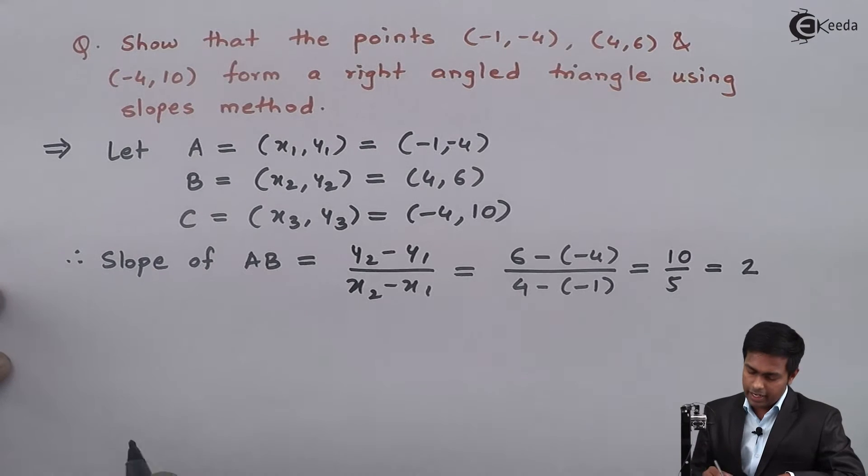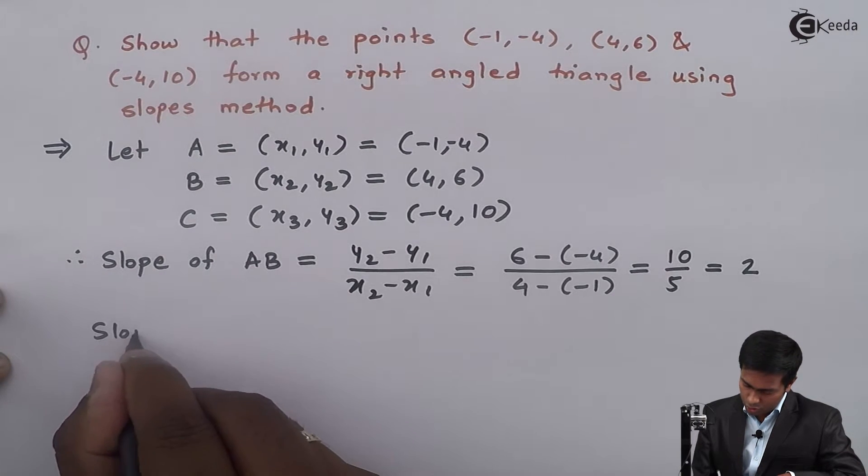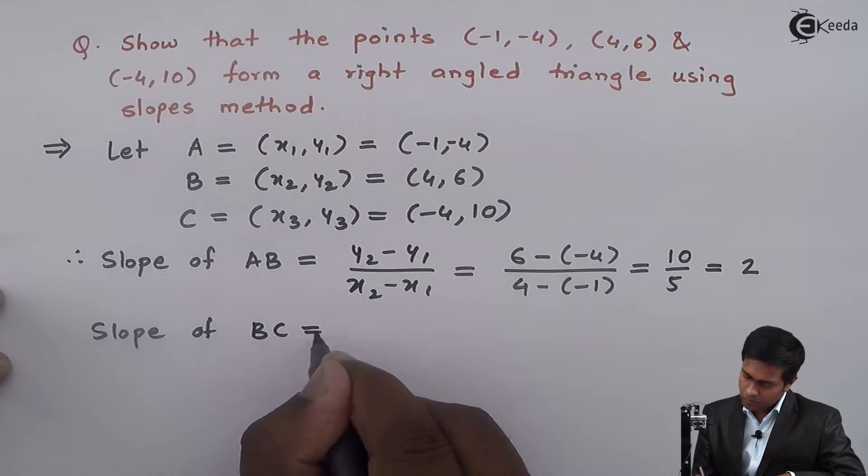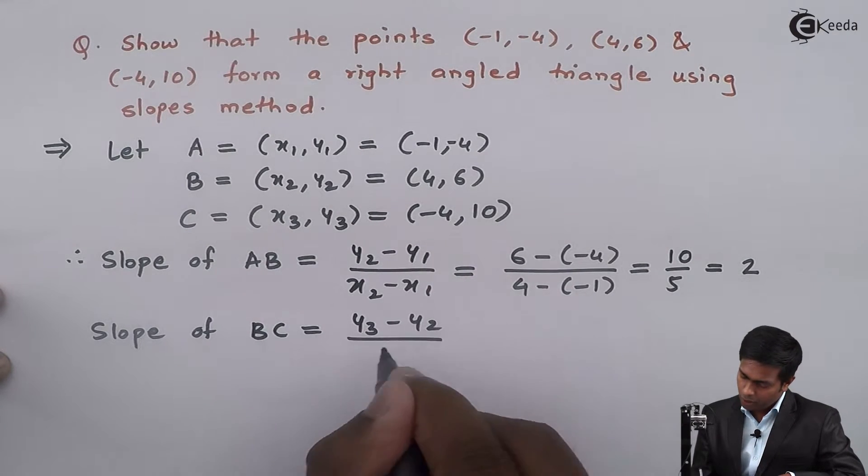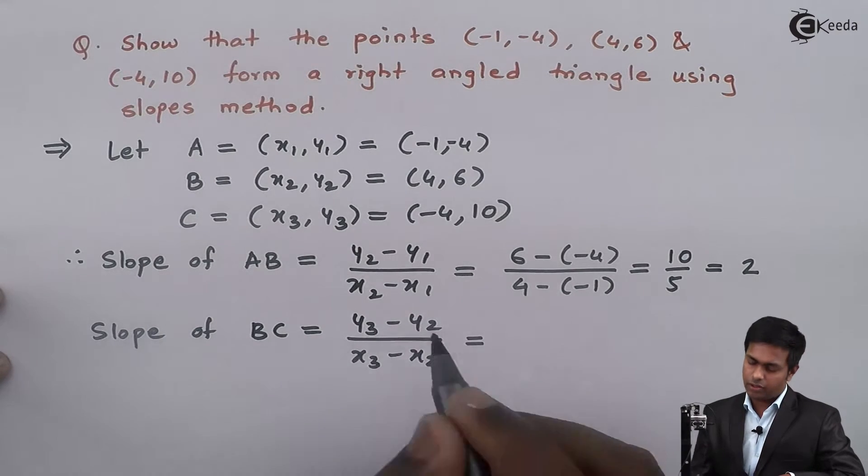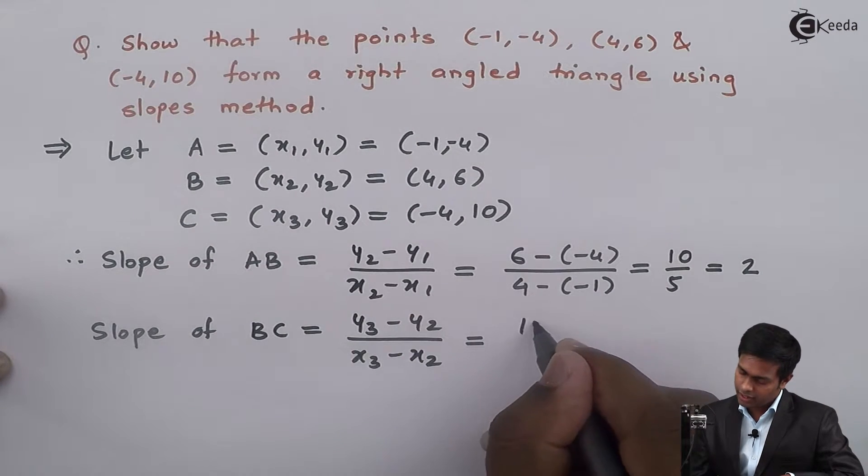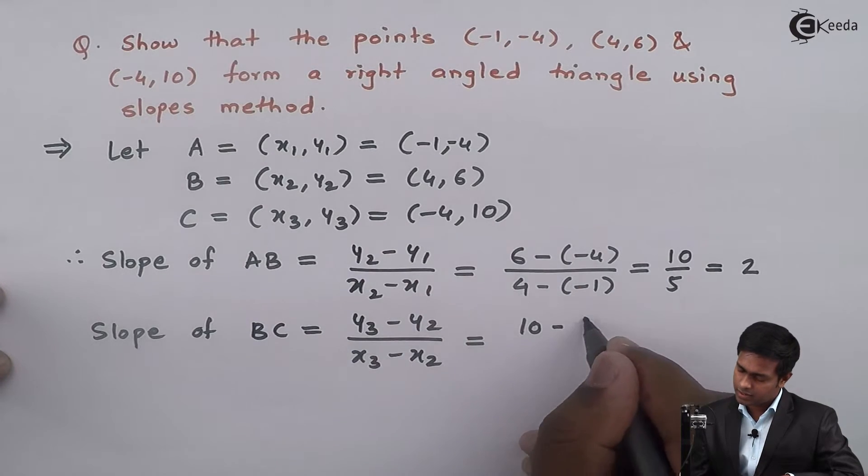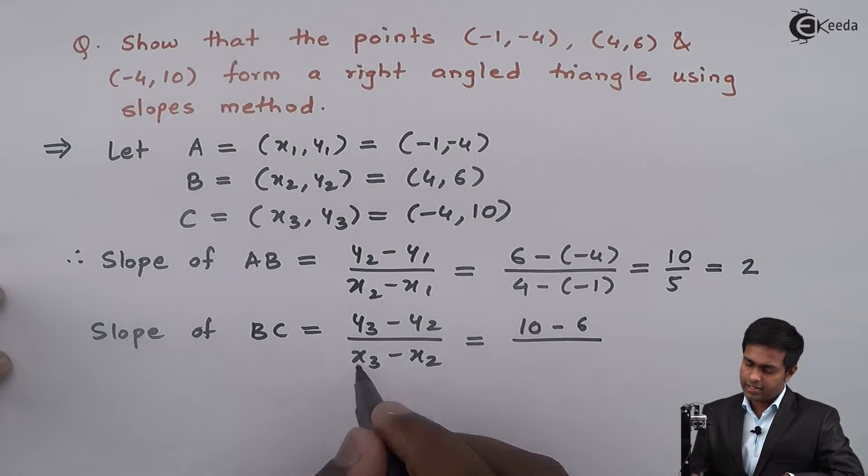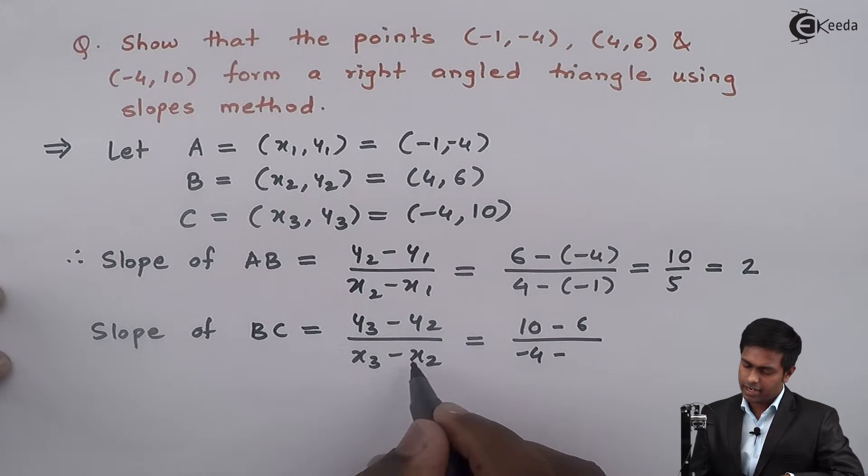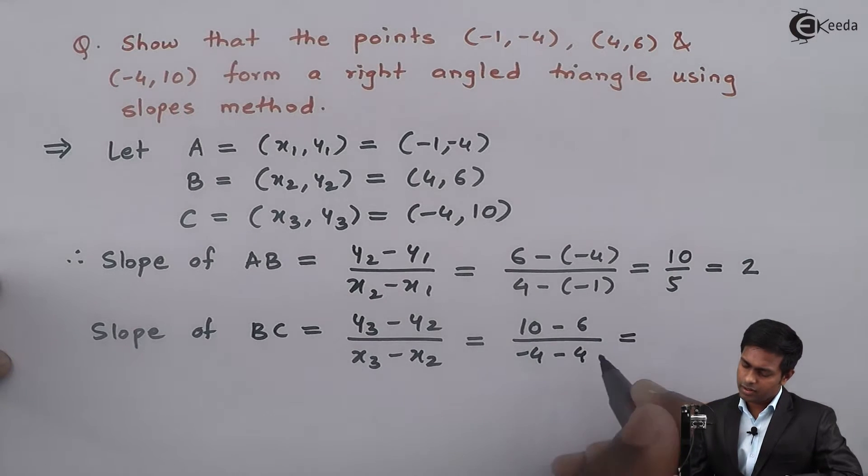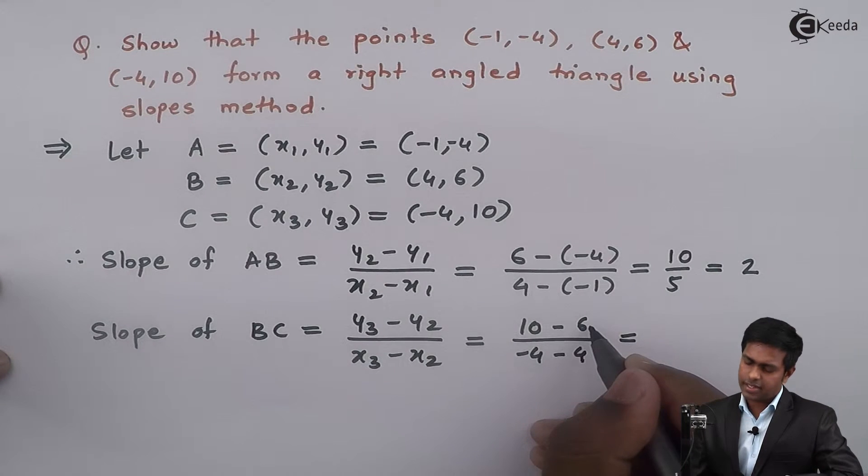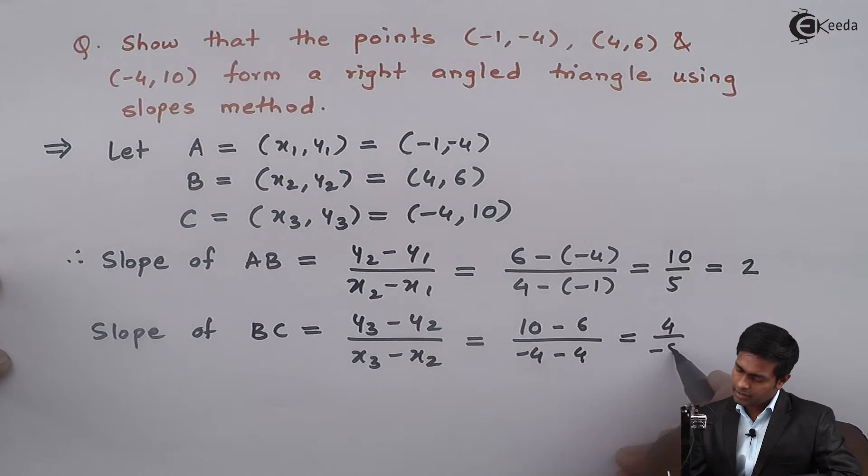Slope of BC is (y₃ - y₂)/(x₃ - x₂). The value of y₃ is 10, so (10 - 6)/(-4 - 4) = 4/(-8) = -1/2.